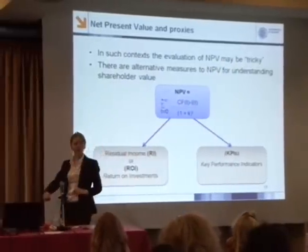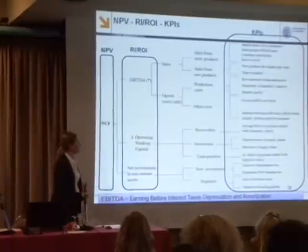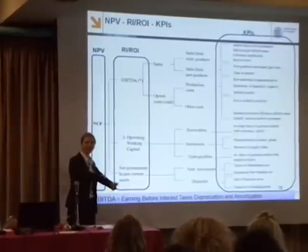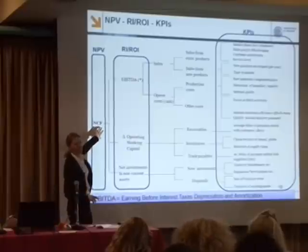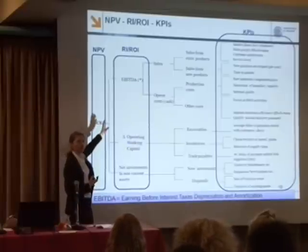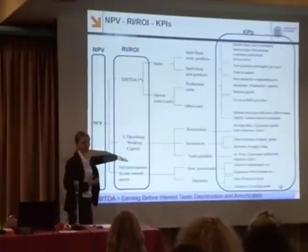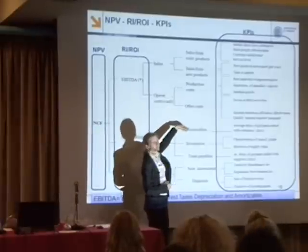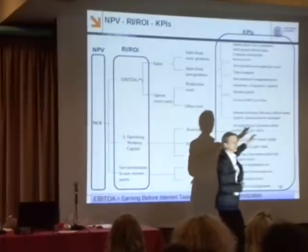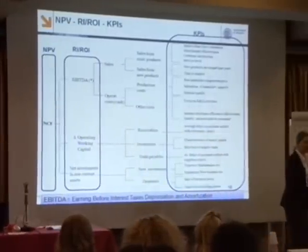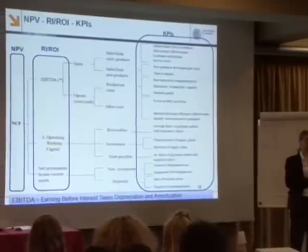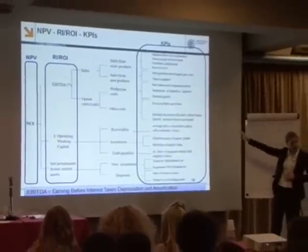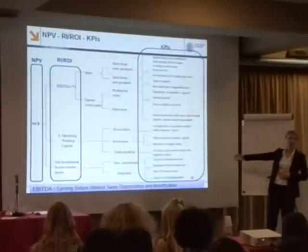For your own reading, this is what is called the value tree, which tries to put together everything. Here you see the net cash flow — our cash. How can we generate cash? By selling products and making investments. Then we have sales from products, new products, production costs. But how can I control that I'm generating sales and cash by looking at customer satisfaction? At the very last element we have the key performance indicator. We will tackle this tomorrow.